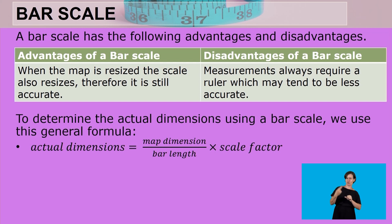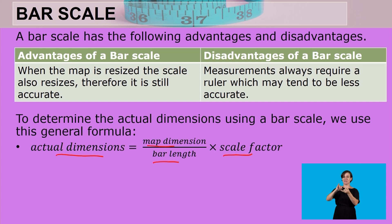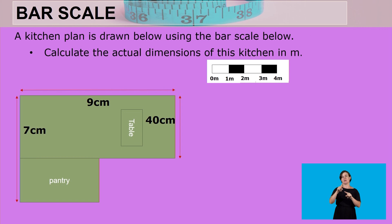To determine the actual dimensions using a bar scale, we use the following general formula: actual dimensions equals the map dimension divided by the balance, then multiplied by the scale factor. We find how many of these balances fit into the map dimensions, then multiply by the scale factor.